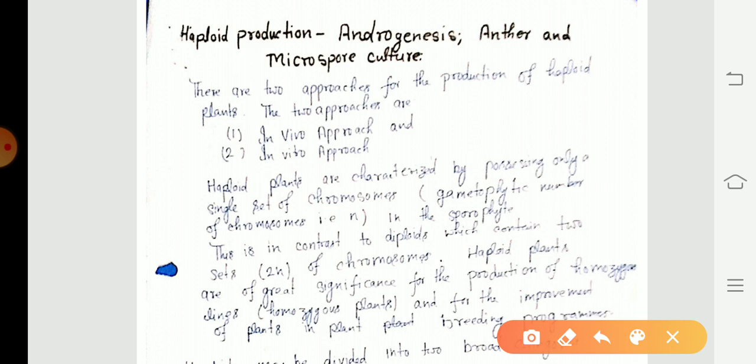First of all, I would like to discuss androgenesis. Androgenesis is the process through which we can produce haploid plants. There are two approaches for the production of haploid plants: in vivo approach and in vitro approach. Haploid plants are those having only a single set of chromosomes in the sporophyte stage of the plant.